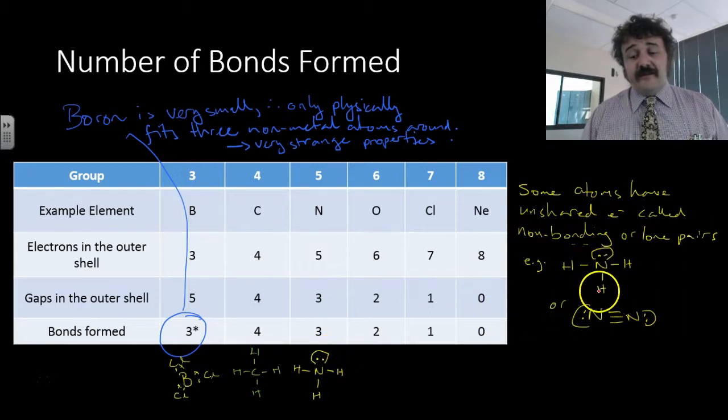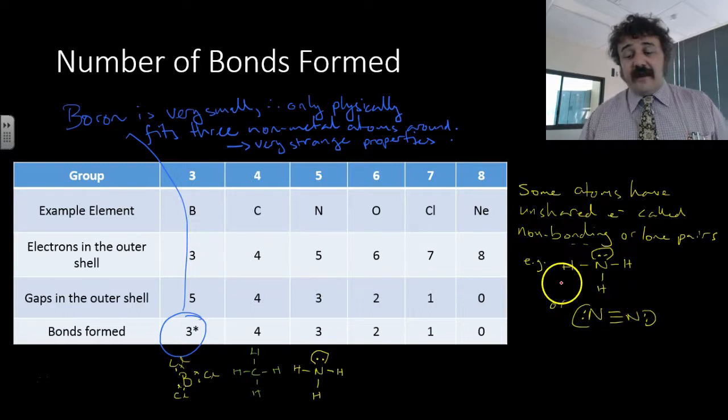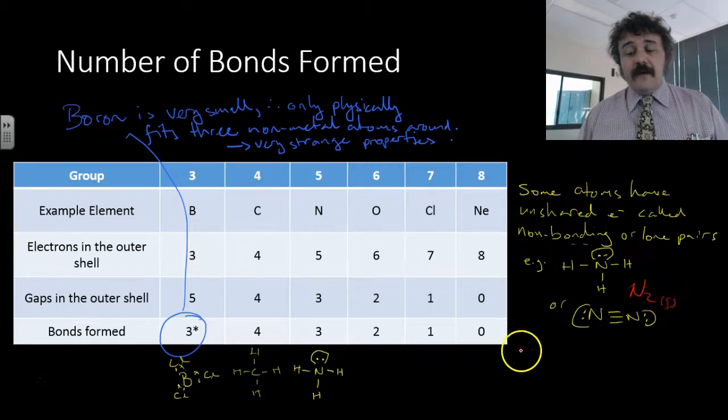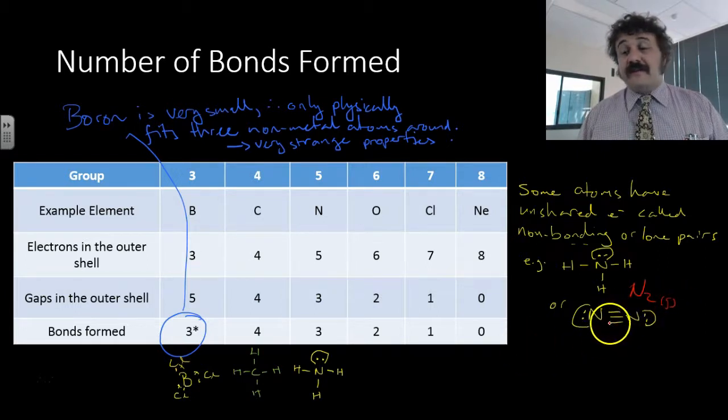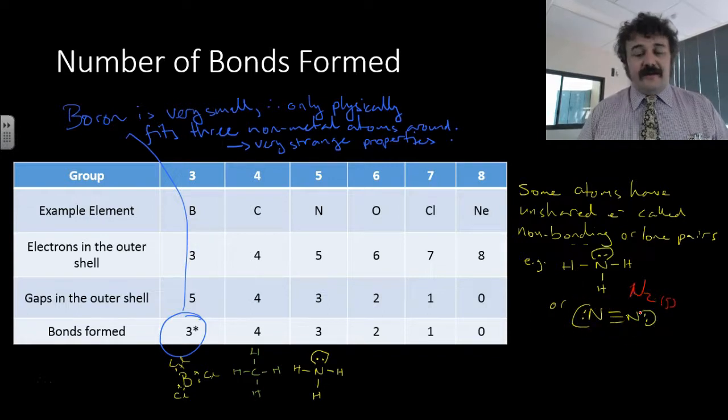And you see here it is in nitrogen, or when nitrogen makes N2 gas, we can see that it makes three bonds with itself and it has two non-bonding pairs, or lone pairs, at the ends.